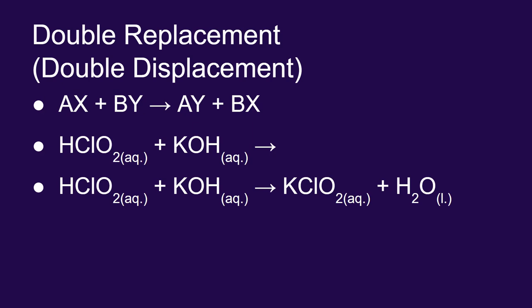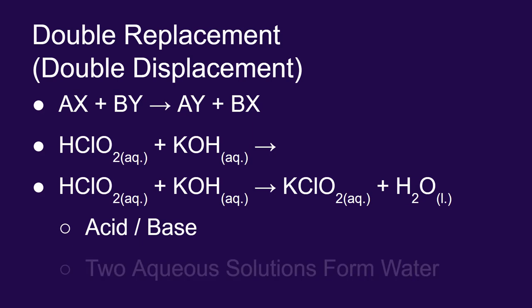And when they swap partners, the hydrogen goes with the hydroxide to make water, and potassium goes with the chloride ion to make potassium chloride. These acid-base reactions always form water as a product. The other product they make is called a salt. So potassium chloride in here is the ionic product of an acid-base reaction. That is the definition of a salt.